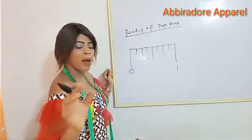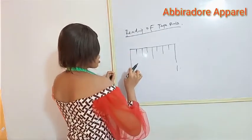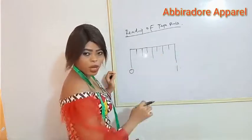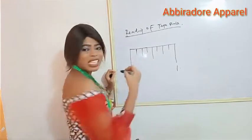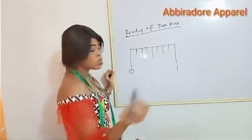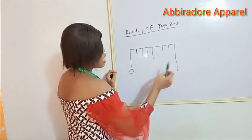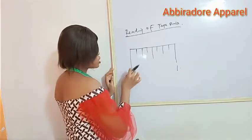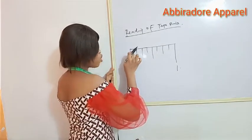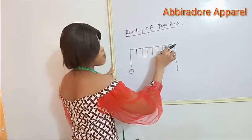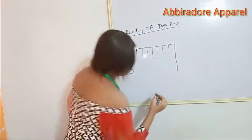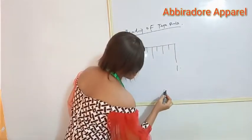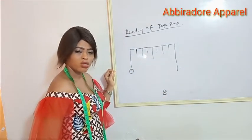Another thing I want you to capture is this: in between point 0 and point 1, how many lines do we have? We have 8 lines. If I start counting, we have 1, 2, 3, 4, 5, 6, 7, 8. Now, how many blocks do we have from point 0? We have 1, 2, 3, 4, 5, 6, 7, 8. Now, that is going to be my denominator. Because we have 8 blocks, this 8 is going to be my denominator.